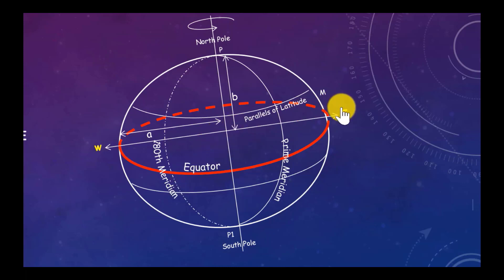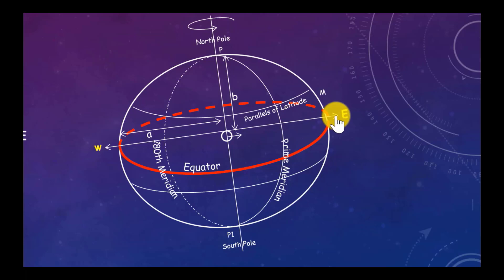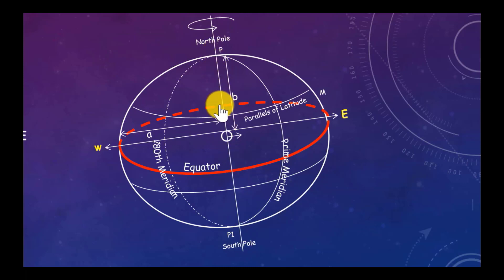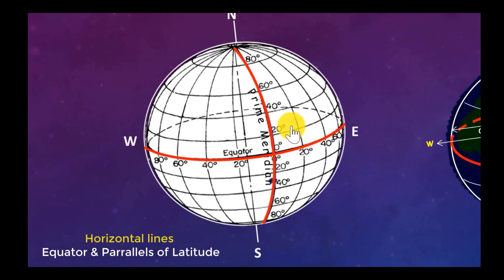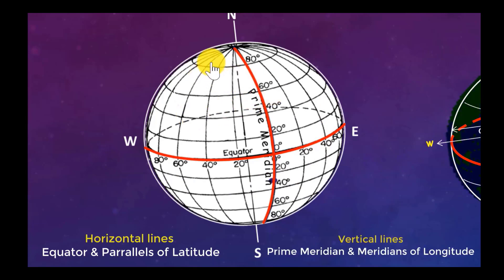If you are the observer facing east, the South Pole is on your right and the North Pole is on your left. Remember: horizontal lines are the equator and the parallels of latitude. Vertical lines are meridians — there is the prime meridian and the meridians of longitude. The other side is the 180th meridian.